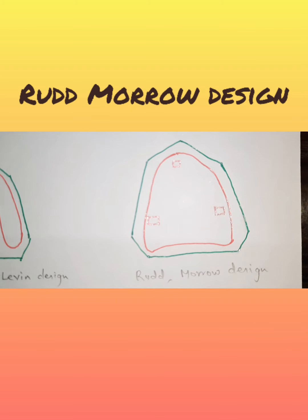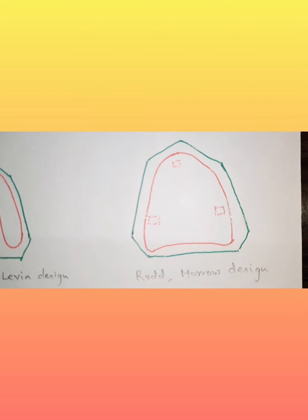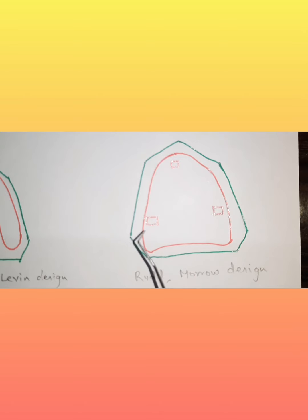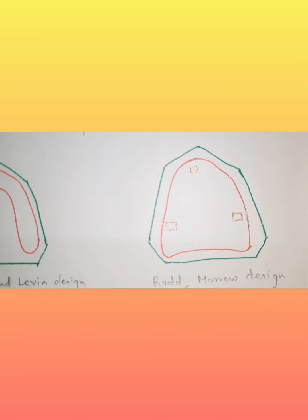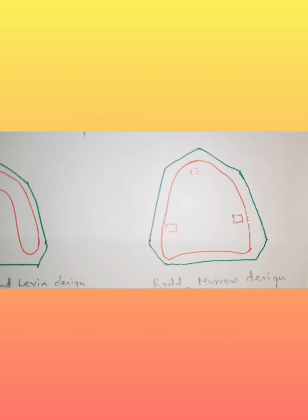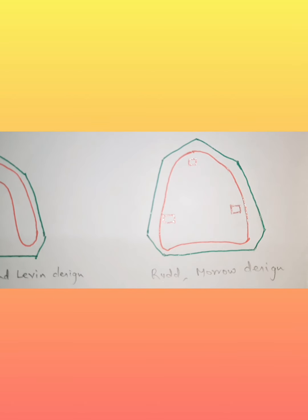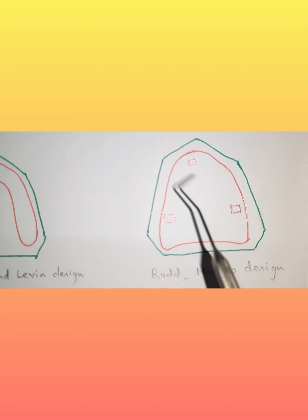In the Redden Morrow spacer design, undercuts are first blocked out with wax, then wax is adapted two millimeters short of the sulcus depth. Tissue stops — holes of four millimeters — are placed in three areas, equidistant from each other. The purpose of these tissue stops is to allow proper vertical seating of the impression tray and to control the thickness of the impression material.